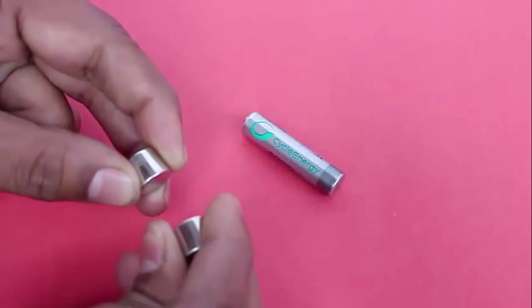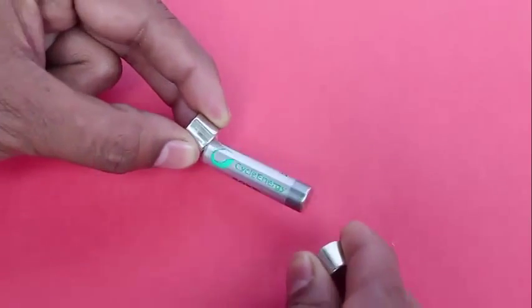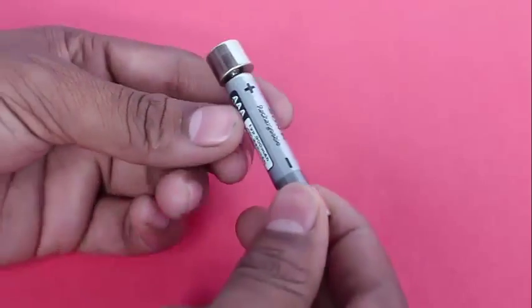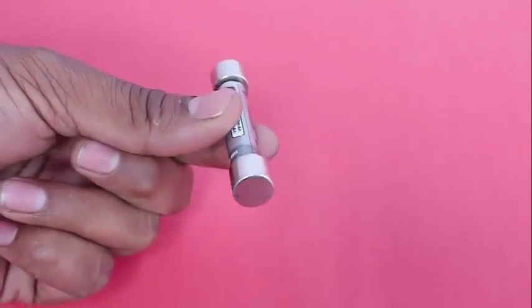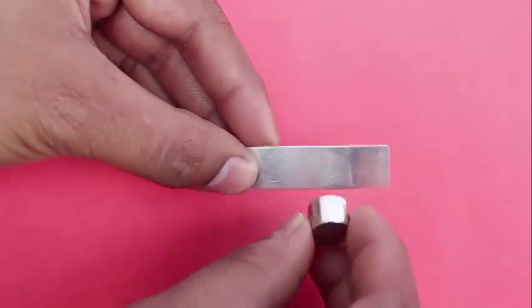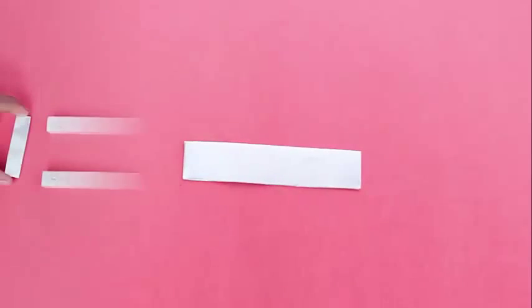Pull these magnets out and position them such that they repel each other, and now sandwich the battery between them. This is the position of the magnets which will make the train run. If your train doesn't run, the position of the magnets has to be interchanged.